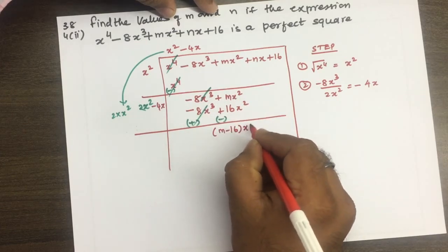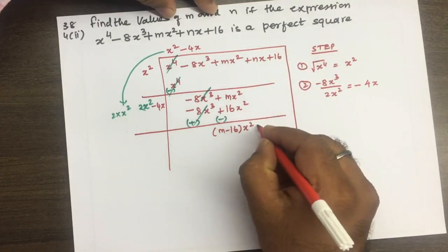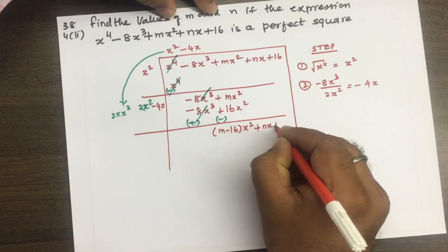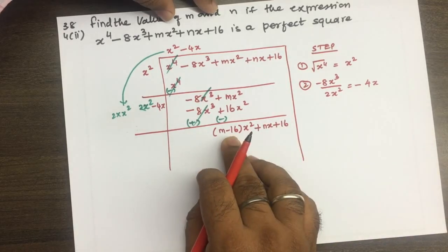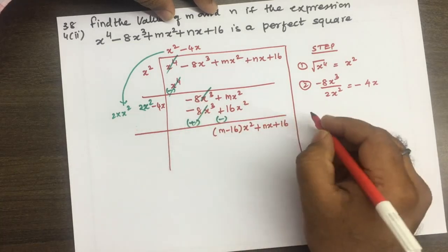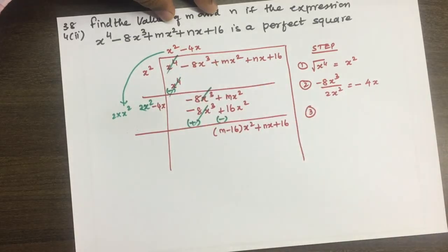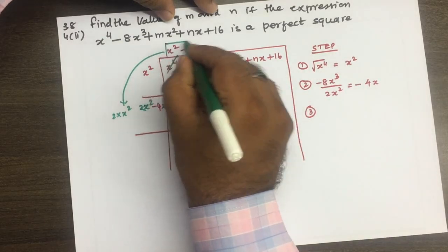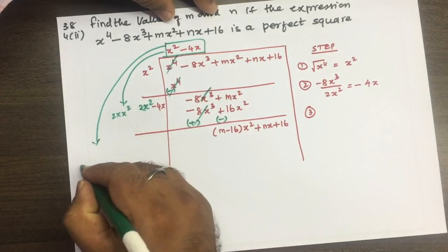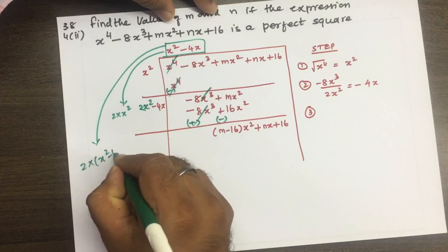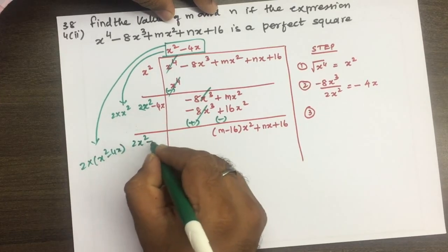m minus 16 x square होगा और अगले दो terms को एक साथ नीचे लेके आएंगे: plus nx plus 16। Step 3 में इन दोनों terms को ऊपर जो दोनों terms हैं उनको एक साथ multiply करेंगे: 2 से, 2x square minus 4x को 2 से multiply करने पर 2x square minus 8x होगा।